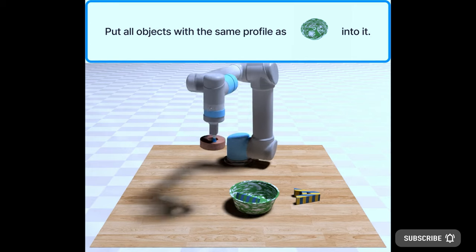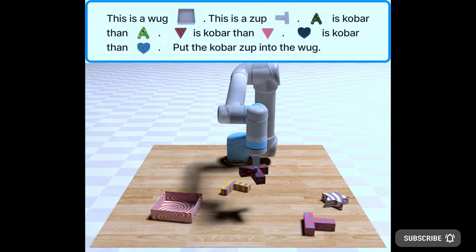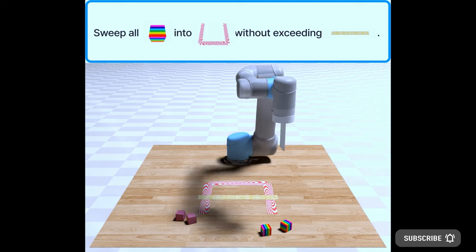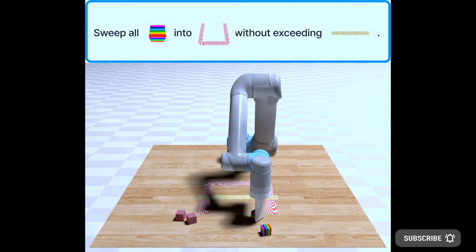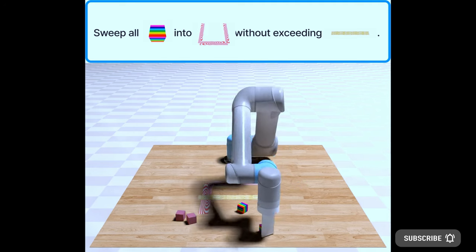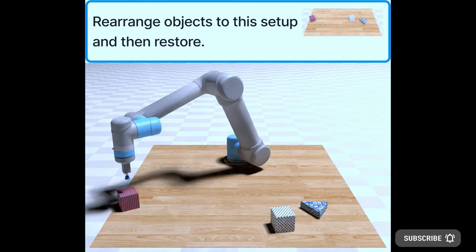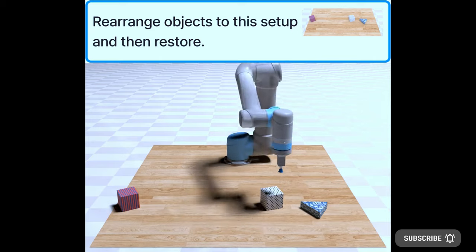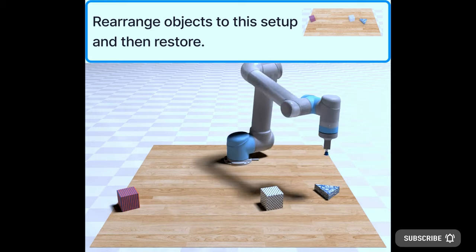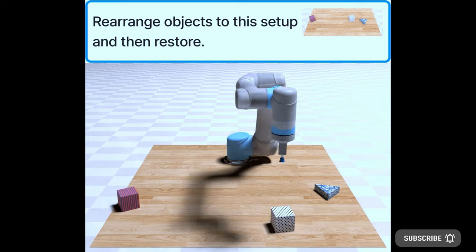VIMA is able to scale up in terms of AI model capacity as well as the size of data. It is superior to previous methods in the most difficult zero-shot generalization settings by as much as 2.9 times the performance rate when using identical training data. With 10 times less training data, VIMA is still 2.7 times more efficient than the next best alternative.